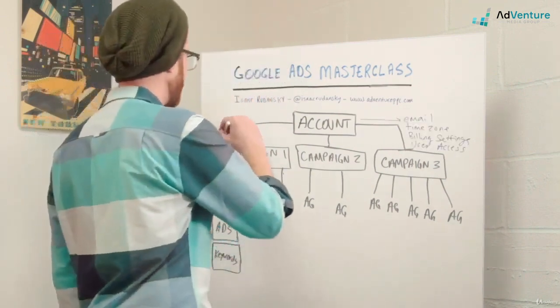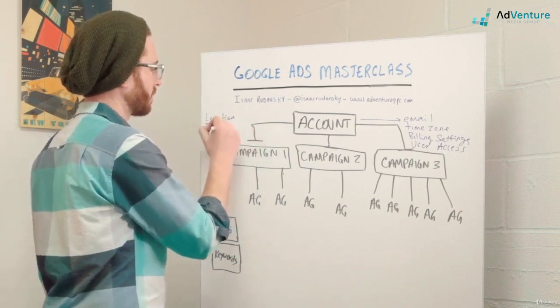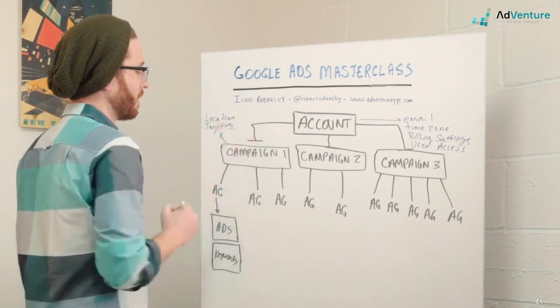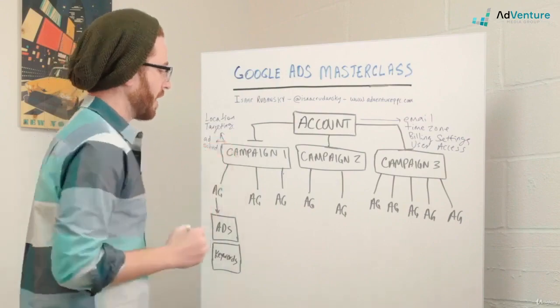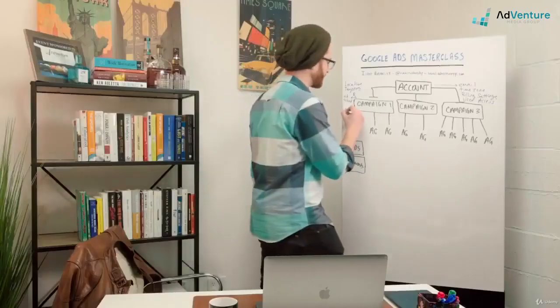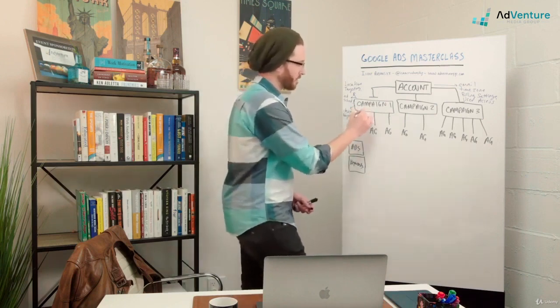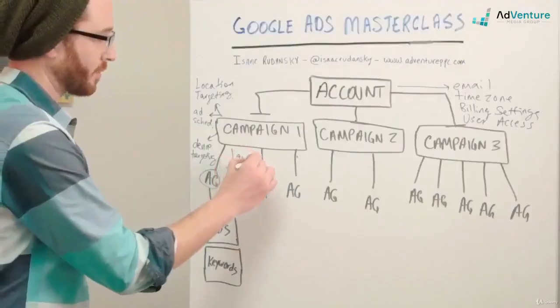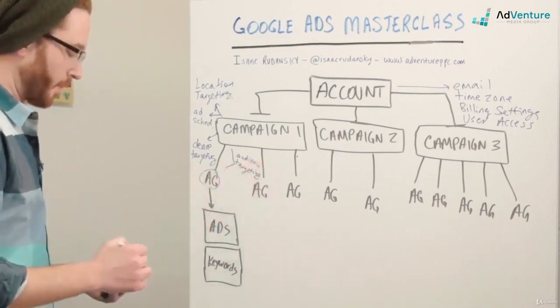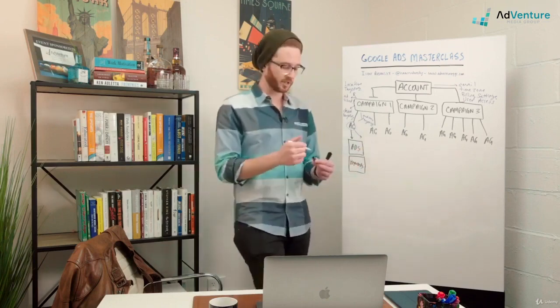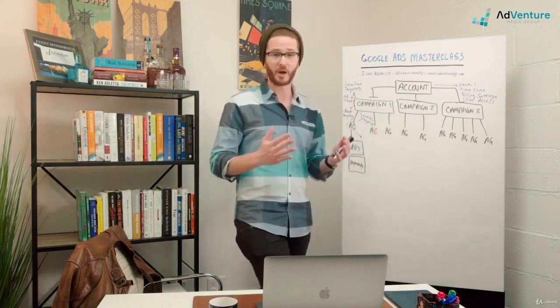At the campaign level, you're dealing with things like location targeting. That's a big one. Where these ads are going to show up. You're dealing with ad scheduling, ad schedule. At the campaign level, you're also dealing with device targeting. There are certain settings that are available at both the ad group and the campaign level, such as audience targeting settings. We'll talk about audience targeting settings in a few lectures from now. At the ad group level, you have ad rotation settings and other settings as well. As we go through the account together, we'll see exactly what settings apply to what level of the account hierarchy.